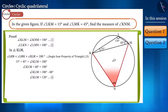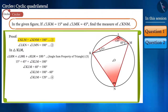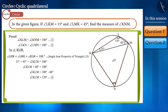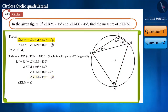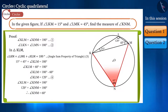But we have to find the value of angle KNM. Observe equation one — the sum of angles KLM and KNM is 180 degrees. By placing the value of angle KLM as 120 degrees, we get the value of angle KNM as 60 degrees.